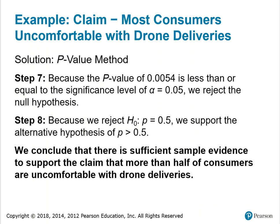Step 7, using the P-value method: because the P-value of 0.0054 is less than or equal to the significance level of alpha equals 0.05, we reject the null hypothesis. Because we rejected the null hypothesis, we support the alternative hypothesis of P is greater than 0.5. We conclude that there is sufficient sample evidence to support the claim that more than half of consumers are uncomfortable with drone deliveries.